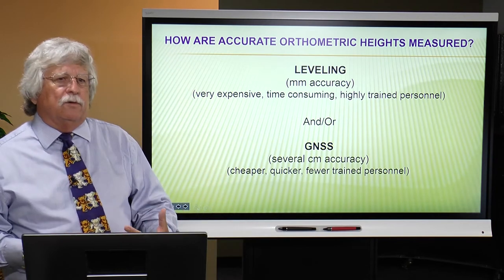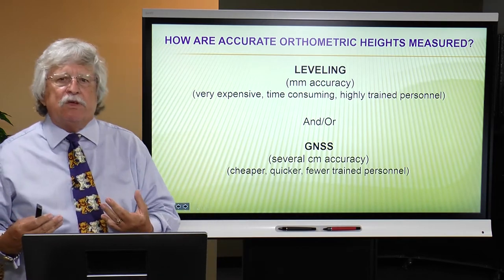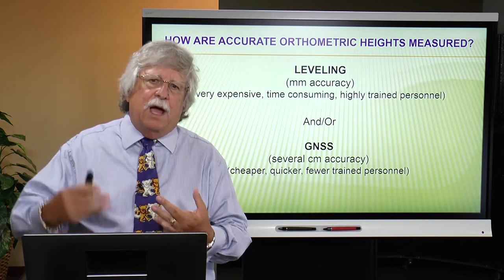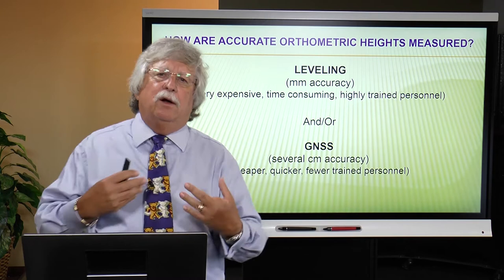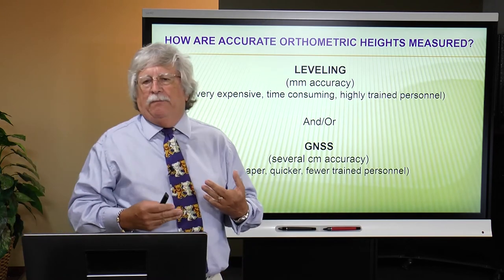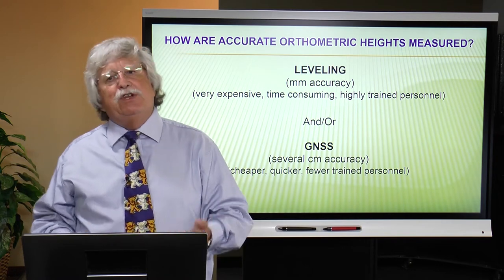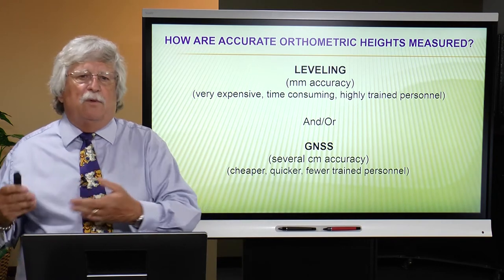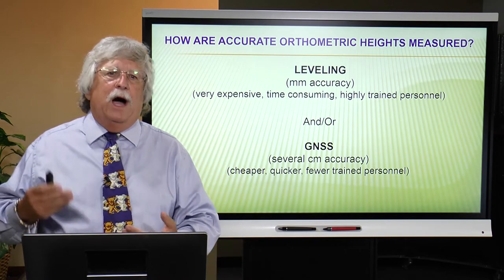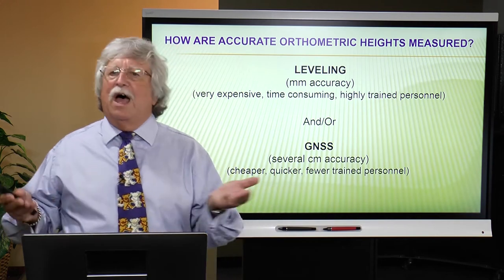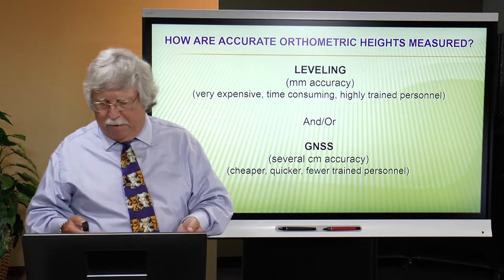As a user acquiring data from some other source, you need to know what they did and how well they acquired it. Remember, the number of digits to the right of the decimal point has nothing to do with the integrity of the data. A height shown to four decimal places done with GPS does not mean it's really that good — you need to know a lot more about it.